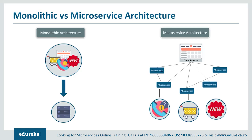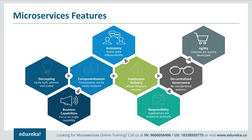Let's summarize the difference between both architectures. Monolithic architecture had a single framework for all the features on a single database, whereas microservice architecture has different microservices for each and every feature, each handling their own database. The features that made developers shift to microservices include: applications were easily built, altered, and scaled; they focused on a single capability; all components could be easily replaced; teams worked independently; they allowed frequent software releases; applications were treated as products; there were no standardized patterns; and all features were quickly developed.